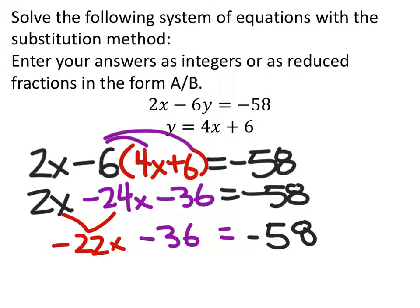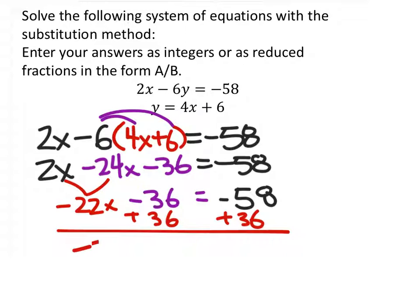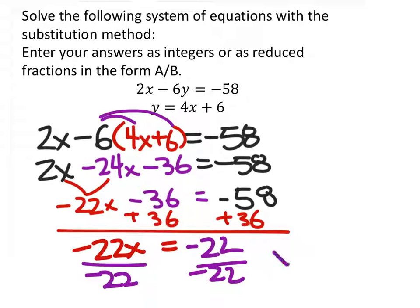And then from here, we would want to add 36 to both sides. And that gives us negative 22x equals what looks to be a negative 22 once again. So we'll divide both sides by negative 22, and we find that x is a positive 1, which is part of our answer here.